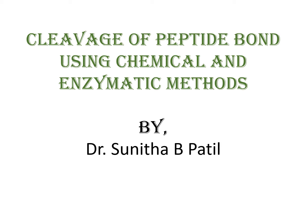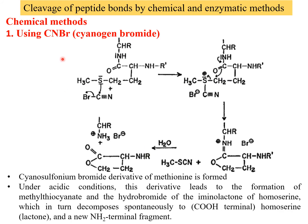The first method is a chemical method using cyanogen bromide (CNBr). Cyanogen bromide hydrolyzes peptide bonds at the C-terminus of methionine residues. This reaction is used to reduce the size of polypeptide segments for identification and sequencing. Consider a peptide to which the cyanogen bromide reagent is added.